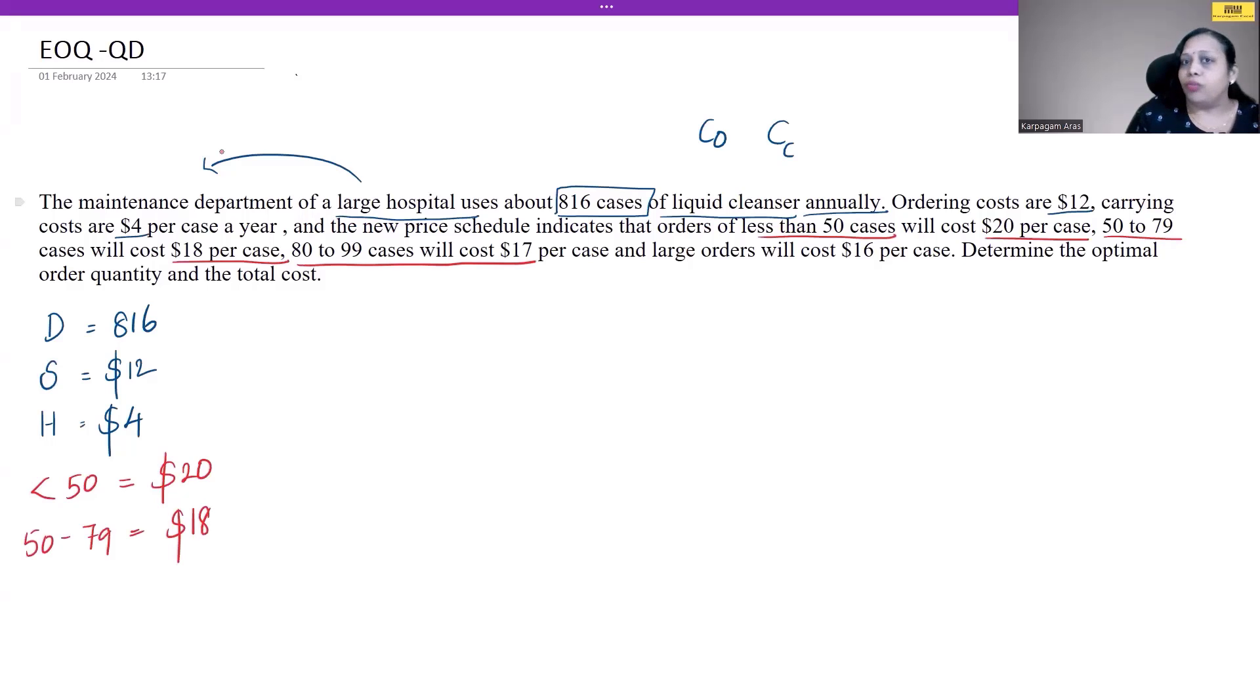At the next level, 80 to 99 cases will cost us $17. Then the large order will cost $16 per case, which means anything above 99 will incur $16. Anything above 99 is 100 and above—greater than or equal to 100 will be $16. They have asked us two questions: determine the optimal order quantity and the total cost.